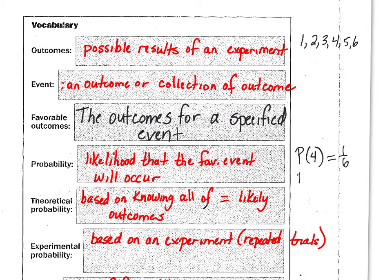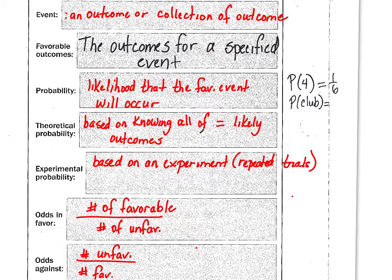What would be the probability of pulling a club out of a deck of cards? Well, the favorable outcomes are the clubs. How many clubs are in a deck of cards? Thirteen. So the probability of a club. How many clubs are in a deck of cards? There are 13 out of 52 clubs. Is that reduced? Yes, it does. It's one-fourth. So your probability of pulling a club is one out of four.